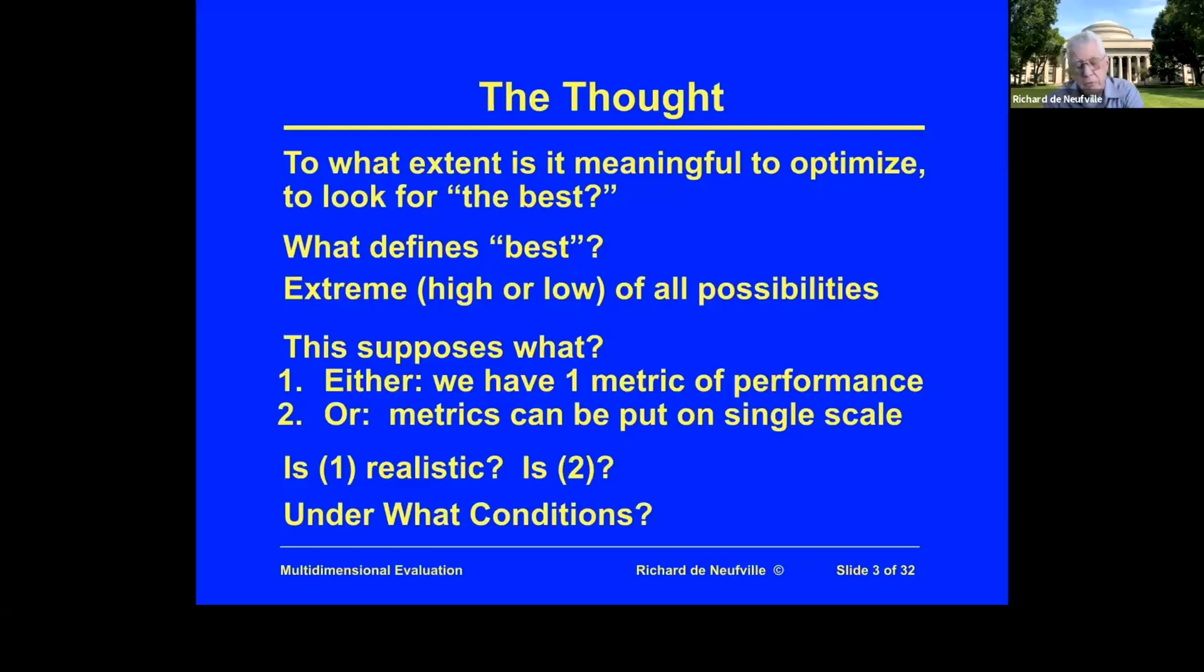So what I'd like you to consider—and I'm happy to discuss with you—is that it's unrealistic to suppose that we can have either a single metric of performance or that we can put all the other metrics onto a single scale that's acceptable. And therefore, that we can talk about a mathematical optimization to find the extreme high or low of all the possibilities. That is a fundamental thought I'd like you to keep in mind.